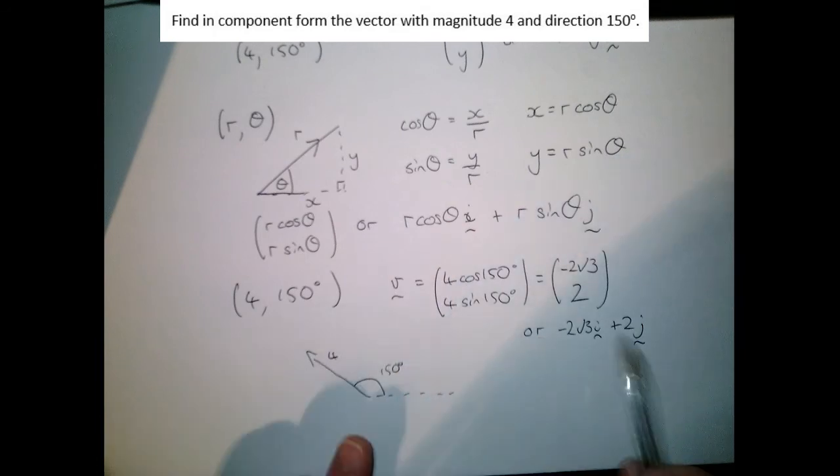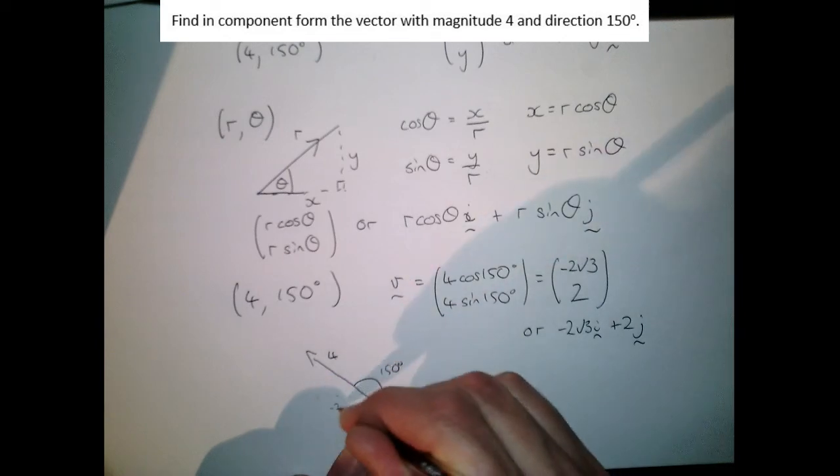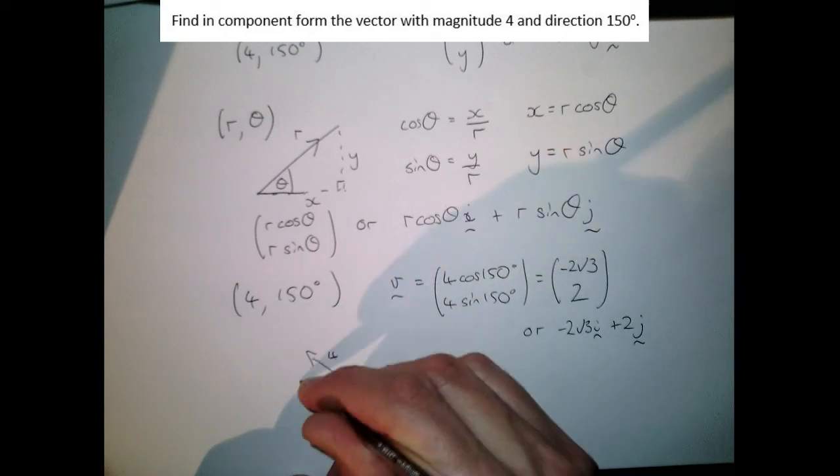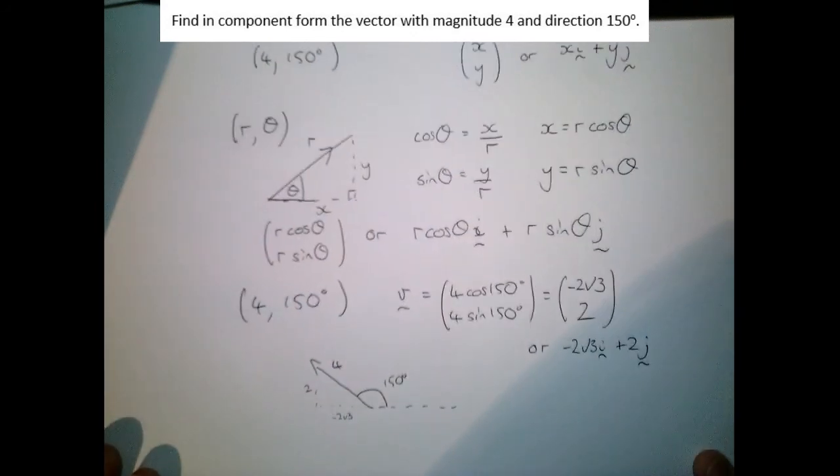Does that feel about right? Well look, yeah, that's going minus 2 root 3 and plus 2, minus 2 root 3 there and that is plus 2, so it feels about right there we are.